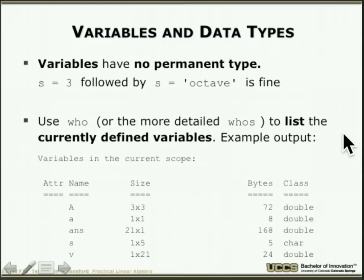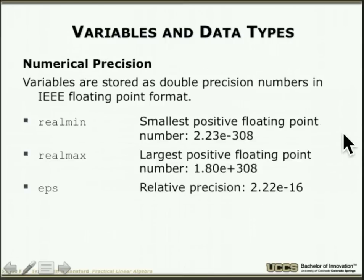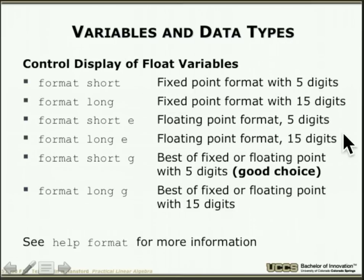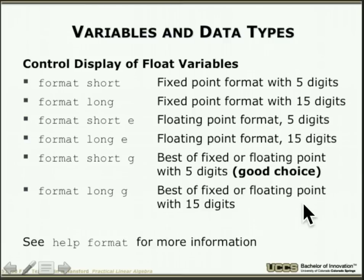There are built-in variables for floating-point precision: minimum non-zero representable number, maximum number, and machine epsilon. To control how variables are displayed, use: 'format short' (5 digits), 'format long' (15 digits), or 'format short e' (floating-point with exponent, 5 digits). This controls the default printing output.